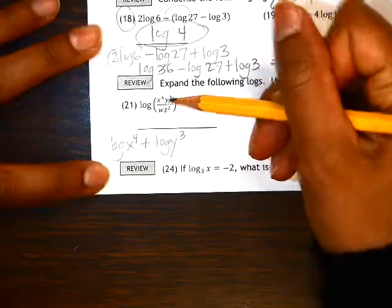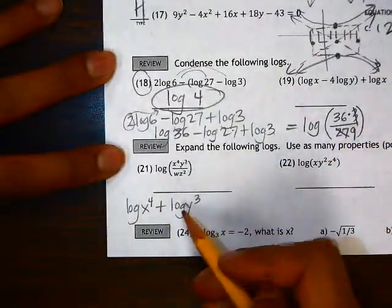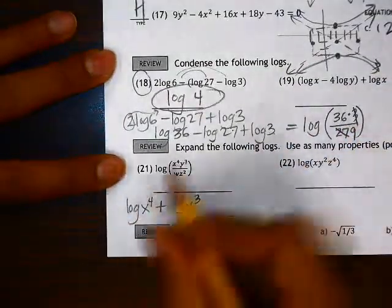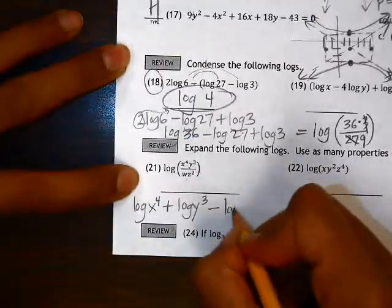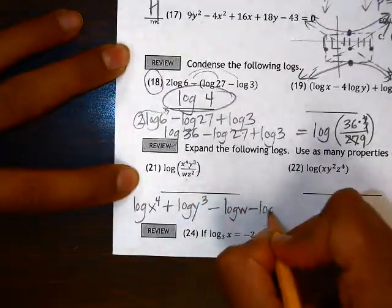If we're dividing, that changes to subtraction of logs when we're expanding it out. So we need to subtract log w and subtract log z squared.